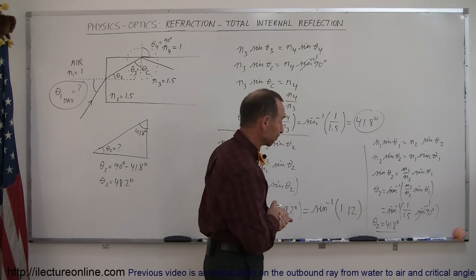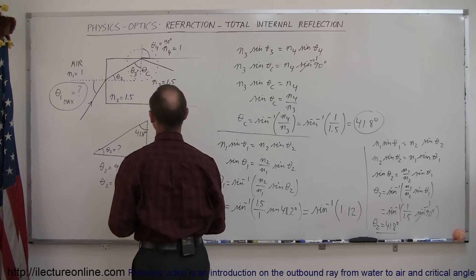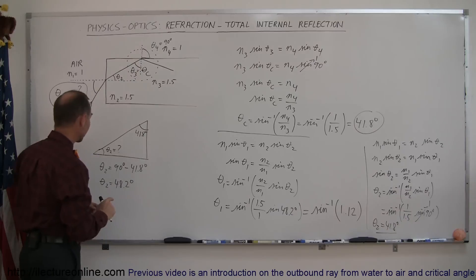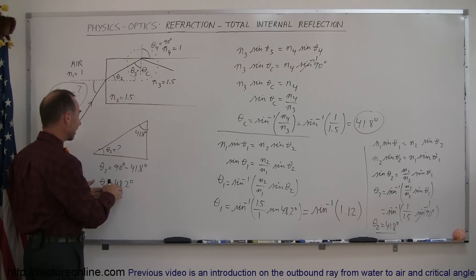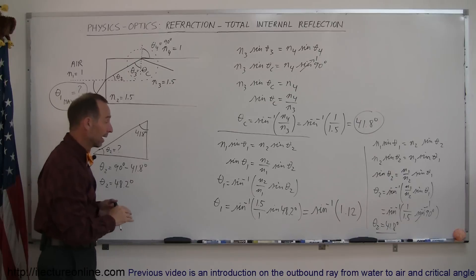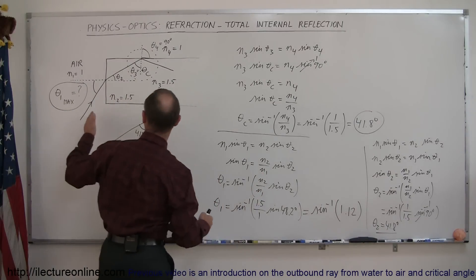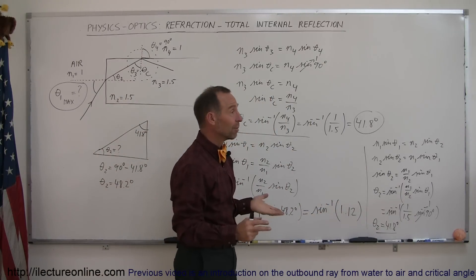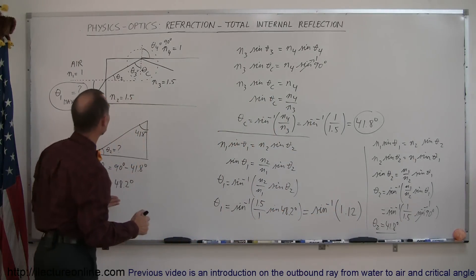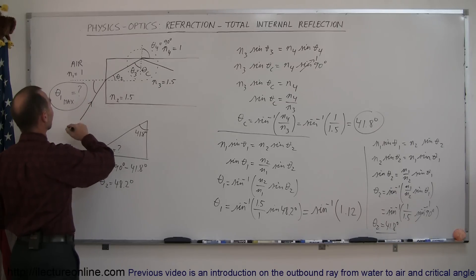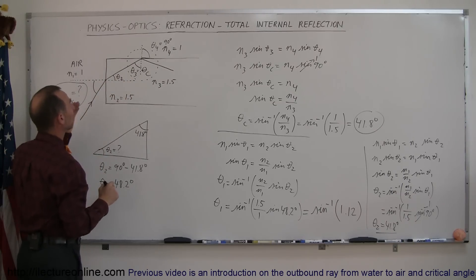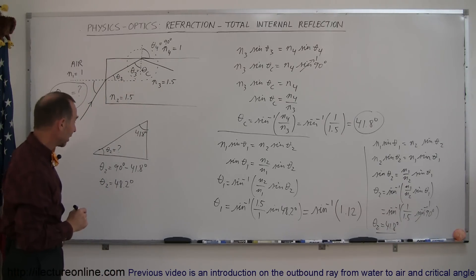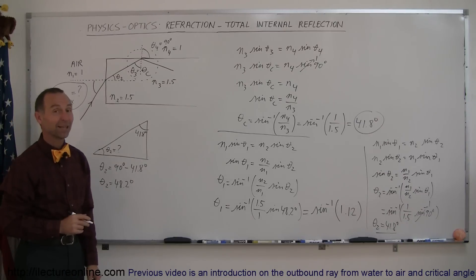This is a really interesting result. What we found was that the critical angle needs to be at least 41.8 degrees, meaning theta sub 2 must be less than or equal to 48.2 degrees. But even if we make theta sub 1 as large as possible — 90 degrees — the largest theta sub 2 can be is only 41.8 degrees. That means there is no maximum angle for theta sub 1. Any angle of incidence will work, and as long as you shine light into the fiber optic cable, it will never leave the cable and will just keep going. And that's how you do that.